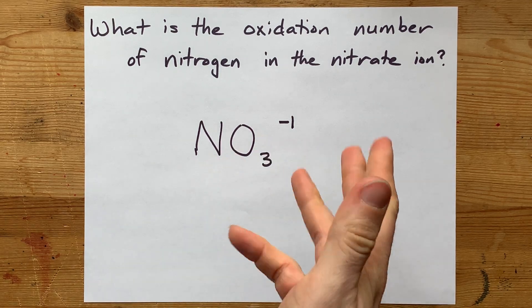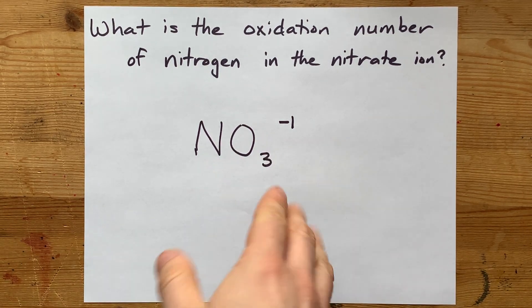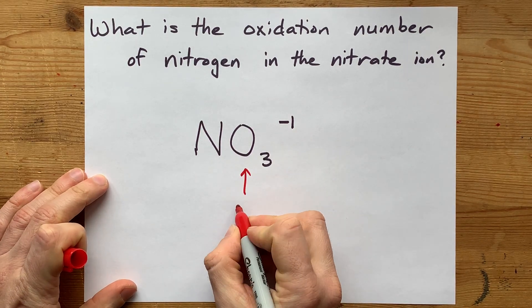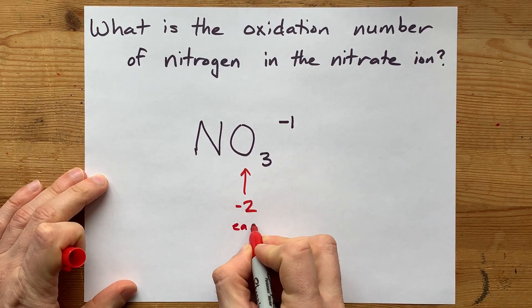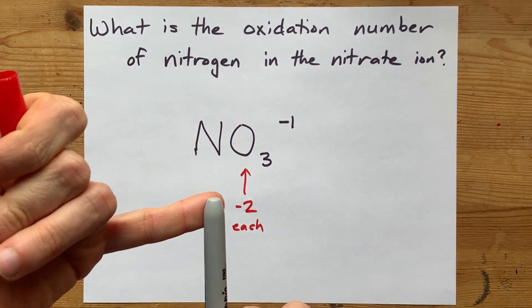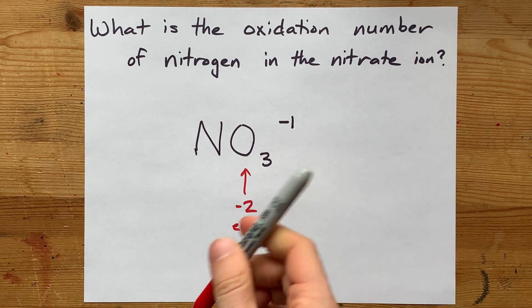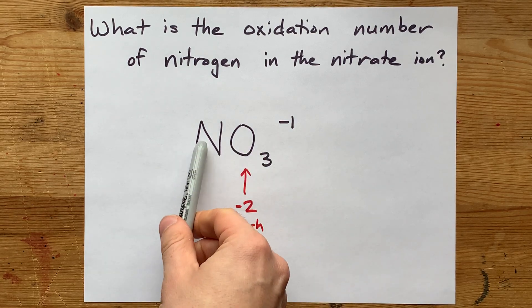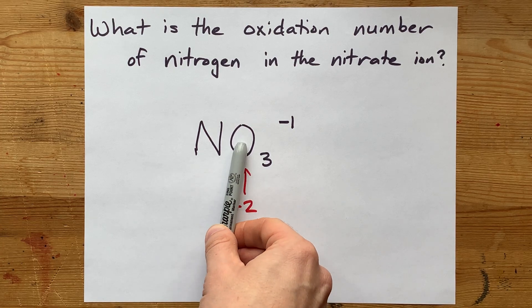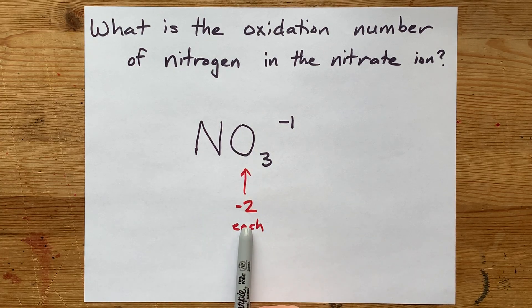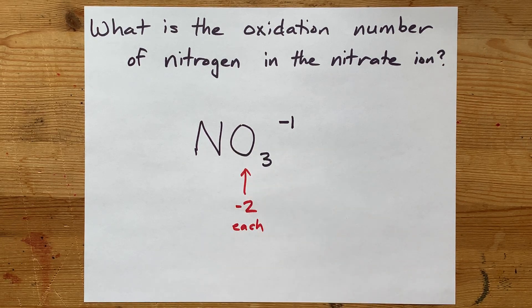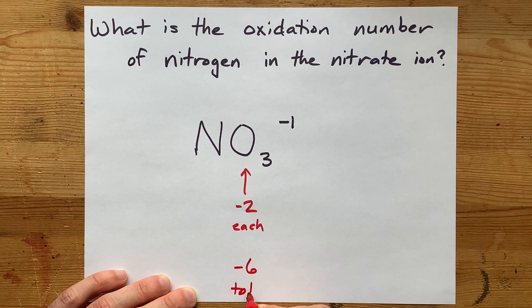Now, oxidation rules say lots of things, but one of the top priority rules is that each oxygen is minus two by default. There are exceptions to that, like in peroxides, but there's no elements here that imply there's an exception. Each of these oxygens is going to be assigned an oxidation number of minus two, which means that the three of them together is minus six.